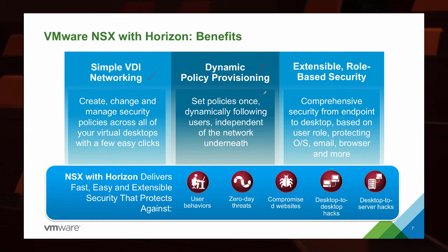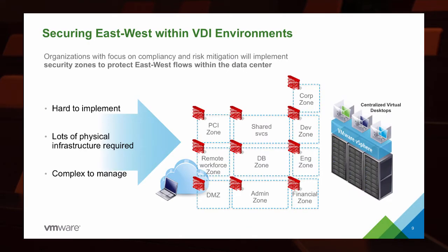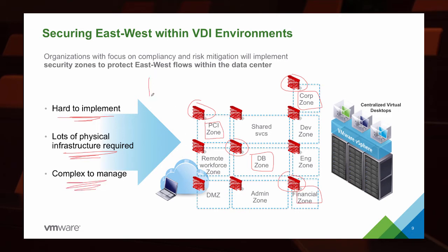Now let's look at some of the technical benefits of leveraging NSX with Horizon. We could secure east-west within VDI in a physical realm — having a zone for PCI compliance, a zone for databases, a zone for finance, each with different physical firewalls. But the problem is, this would be really hard to implement, requiring a lot of physical infrastructure, and it would be very complex to manage because we'd likely have multiple interfaces for each firewall. Going from one firewall to another to keep configurations replicated across all spaces increases the probability for error.